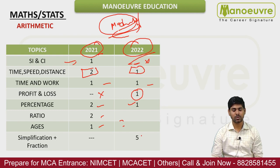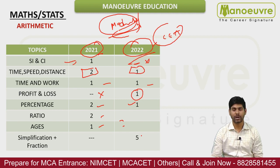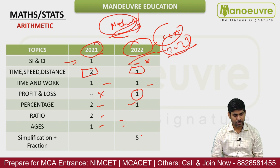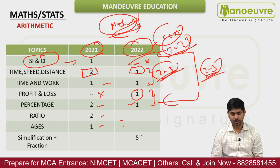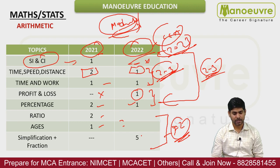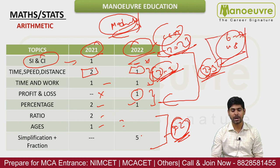Simplification gave 5 questions. Overall, 2022 was a bit easier compared to 2021. So in 2023, what can we expect from Arithmetic? Time and Work and Time Speed Distance combined will definitely give 2 to 3 questions for sure. Profit and Loss, Percentage, and Simple/Compound Interest together will give another 2 to 3 questions. Ratio, Ages, and Simplification will give at least 2 questions. So overall, 6 to 8 questions you can expect from Arithmetic.